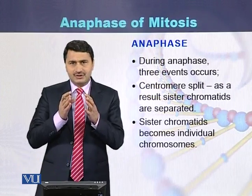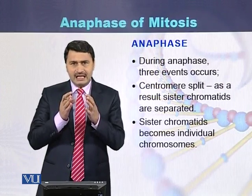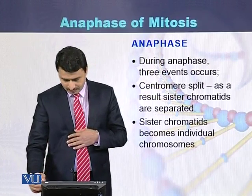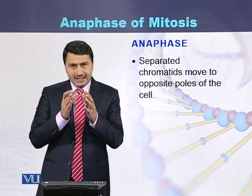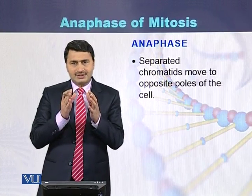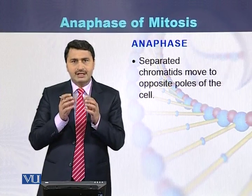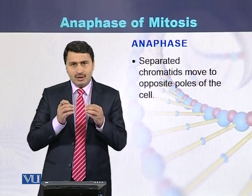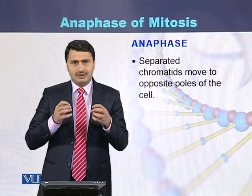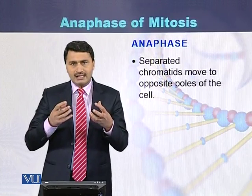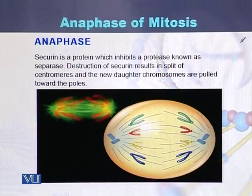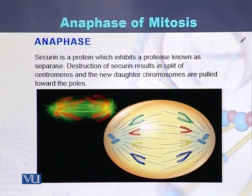Both the sister chromatids now behave like chromosomes. The separated sister chromatids, now called individual chromosomes, start to move towards the opposite direction, towards the pole of the cell.